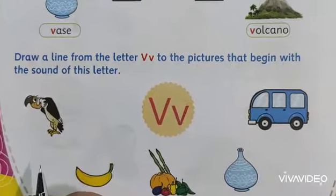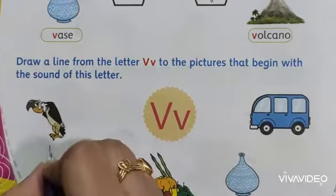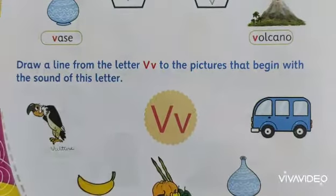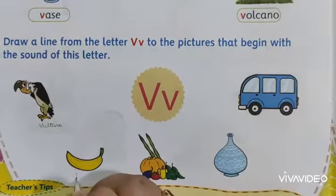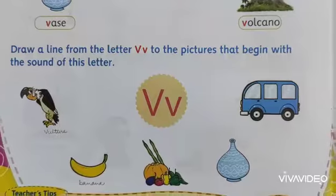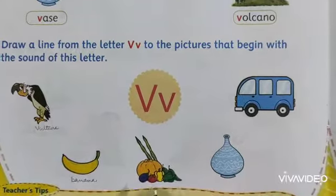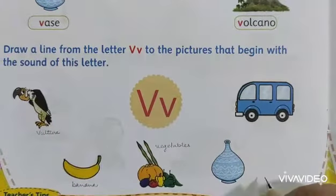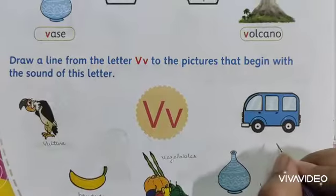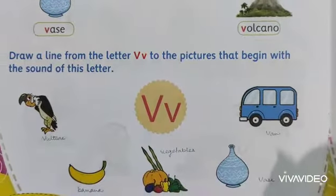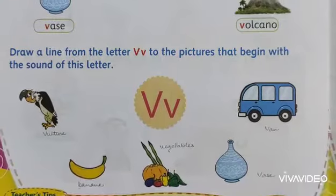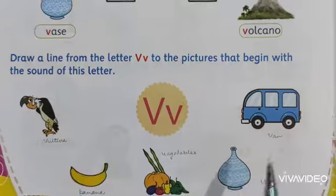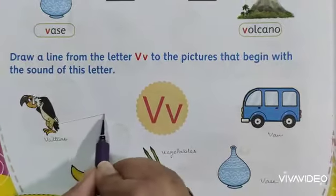First picture — this is Vulture. Vulture is the name of the bird. Vulture's spelling is V-U-L-T-U-R-E. This is Banana — B-A-N-A-N-A. These are Vegetables — V-E-G-E-T-A-B-L-E-S. This is Vase — V-A-S-E. And this is Van — V-A-N. So only Banana is not starting with V; the other pictures — Vulture, Vegetables, Vase, and Van — all are starting with V.